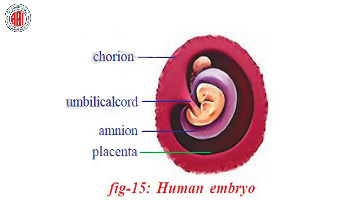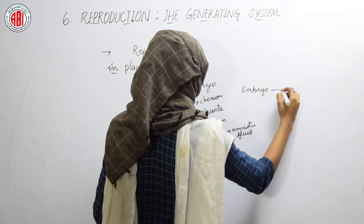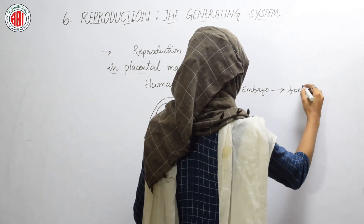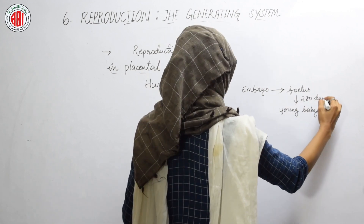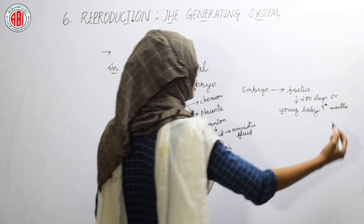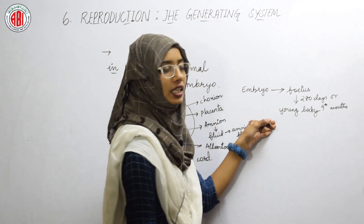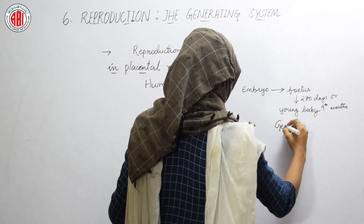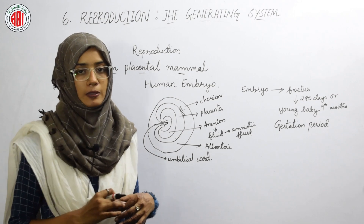These membranes help in the growth and development of the embryo. The embryo becomes a fetus after a period of three months, and the fetus develops into a young baby after 280 days, or nine months. This period of nine months during which the fetus develops into a young baby is called the gestation period. After this period, the birth of a child takes place. That's all for today.